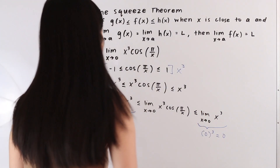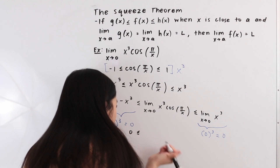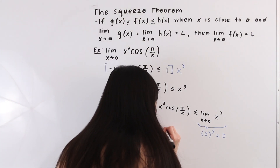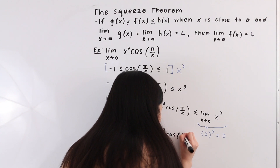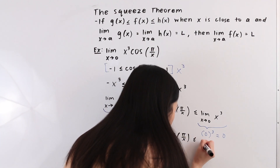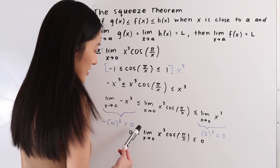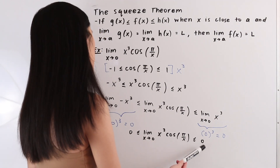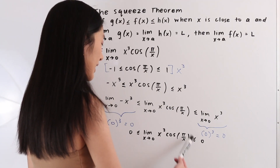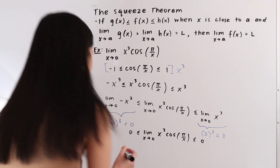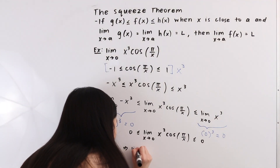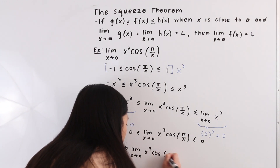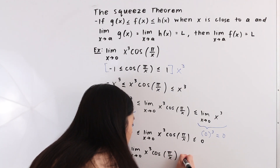We can rewrite this inequality as: 0 ≤ the limit as x approaches 0 of x³ cos(π/x) ≤ 0. This tells us the limit is bounded by 0 and 0, so we can conclude that the limit as x approaches 0 of x³ cos(π/x) is equal to 0.